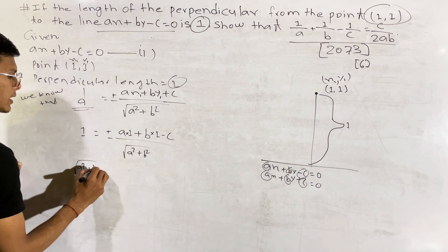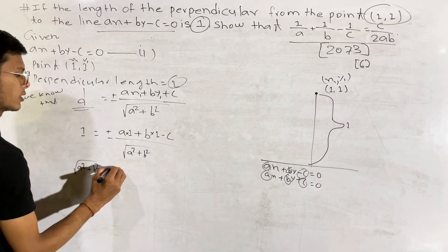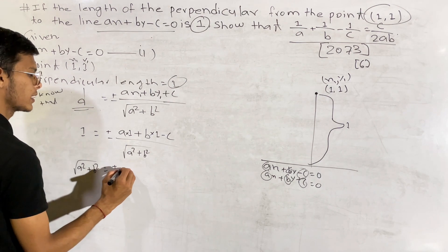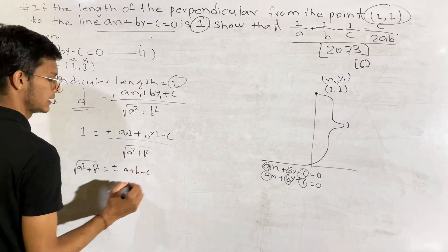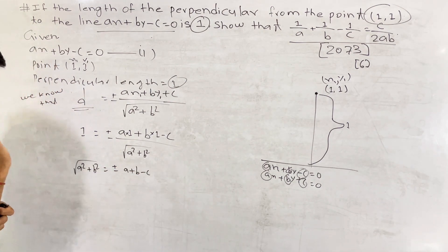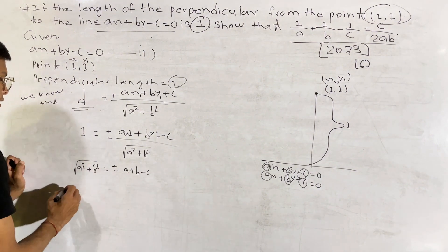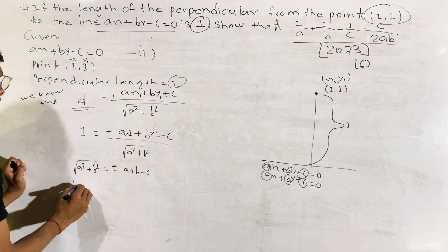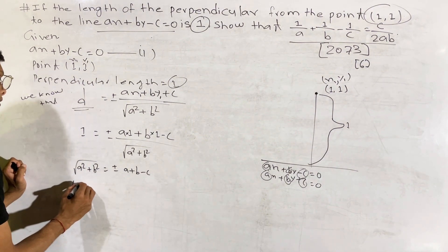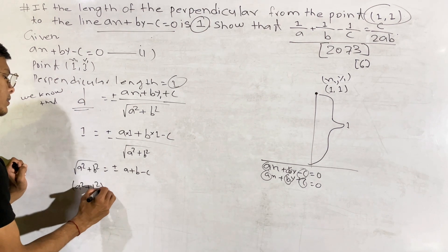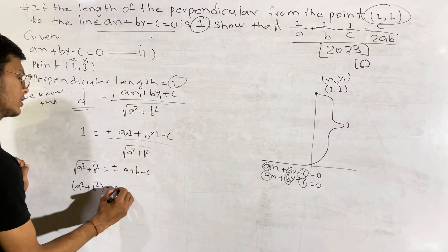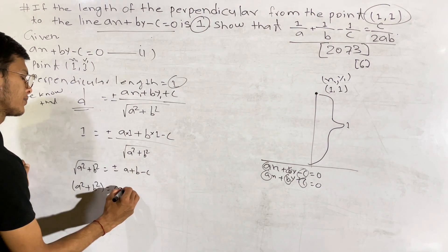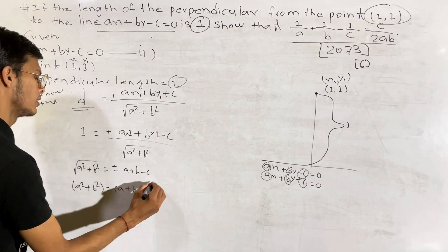A plus B minus C over the square root of a square plus b square equals the distance. We have our squares — this is a square plus b square in the denominator, and a square in the same way.